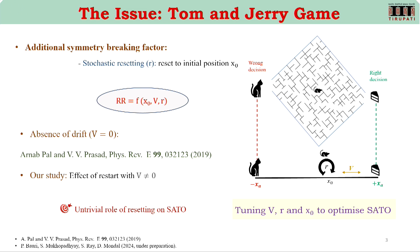In this context, this problem — although not in the framework of decision-making — was first introduced by Dr. Arnov Pal, who is sitting here. In absence of any sort of drift, with an interval and two escape routes, he calculated how stochastic resetting can accelerate the escape time and how it influences the splitting probability. What they found is that depending upon the breaking of spatial asymmetry, resetting can help the escape time under certain conditions, and they analyzed this beautifully. In our particular problem, we made one simple alteration: we introduced a drift term, and we examine the outcome — in terms of physics it is just the addition of a V term with respect to Arnov's paper.